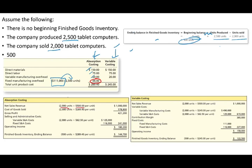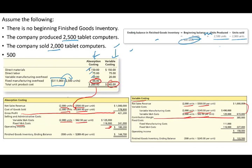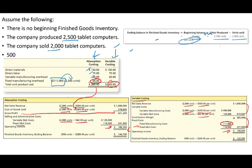Under absorption costing: 2,000 units sold at $500. Cost of goods sold is 2,000 × $298 (unit cost with $44.40 fixed OH). After deducting variable selling and administrative (2,000 × $62.50) and fixed selling and administrative, operating income is $180,200. Under variable costing, operating income is $158,000 — lower than absorption costing because the full $111,000 fixed manufacturing overhead is expensed.